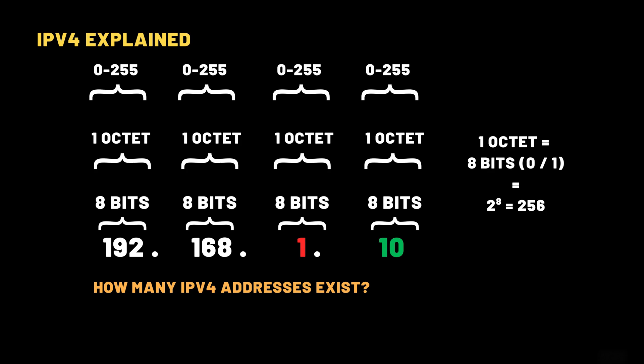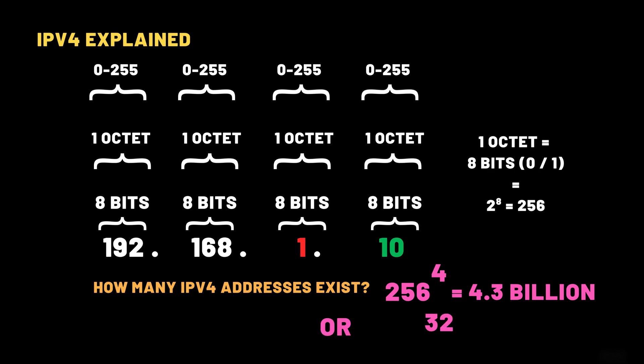How many IPv4 addresses exist? If one octet has 256 possible values and an IPv4 address has 4 octets, we get 256 to the power of 4, which equals approximately 4.3 billion possible IP addresses. Another way to compute this: IPv4 has 32 bits total, and each bit can be 0 or 1, so the total is 2 to the power of 32 — which also equals approximately 4.3 billion possible IP addresses.